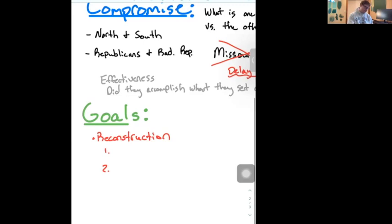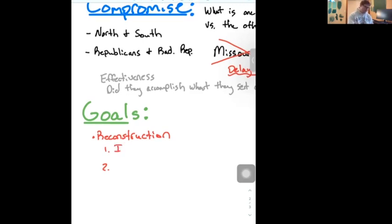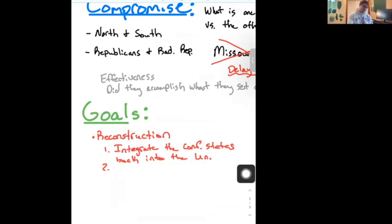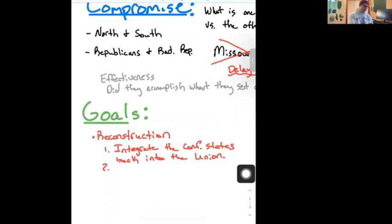Okay. So, I'm going to fancy that up a little bit. So, we want to integrate the Confederate States back into the Union. Now, that's great, Faith. I think that that's absolutely, if not a goal, I mean, it's definitely a goal. I would even argue that that is like the main priority, goal number one. But, can anybody think of a second goal for Reconstruction? And for this, maybe we want to look at things like the 13th or 14th Amendments.